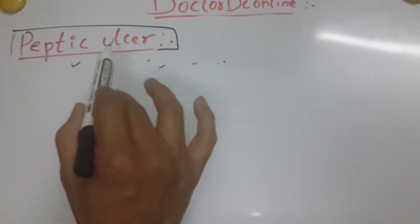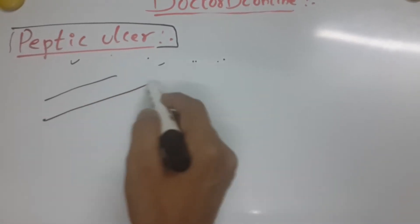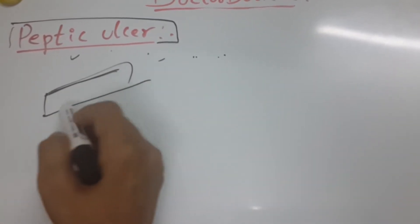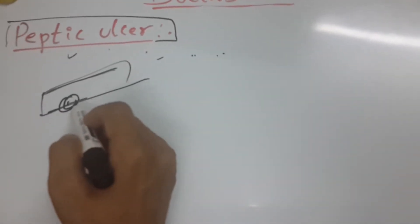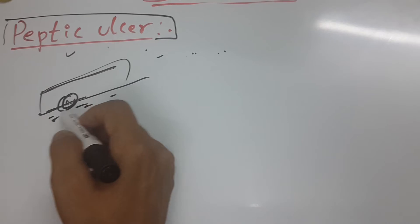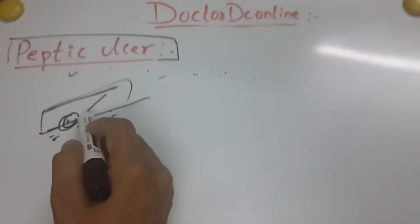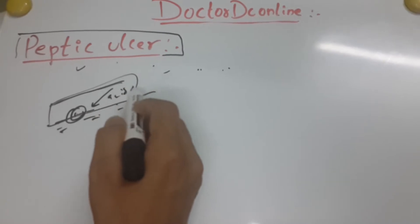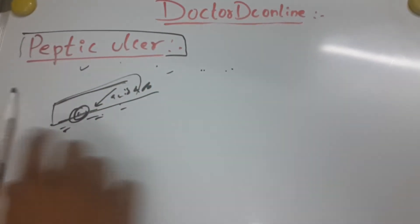To repeat: damage to mucosa — any mucosa — and deeper tissue, maybe submucosa as well, that is exposed to acid and pepsin, is known as a peptic ulcer.